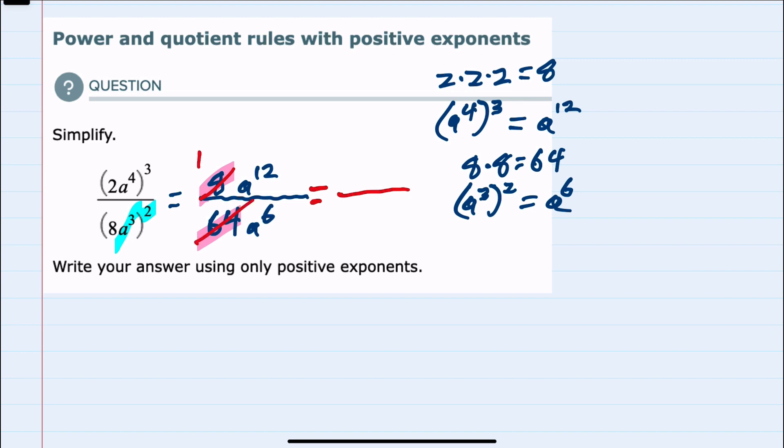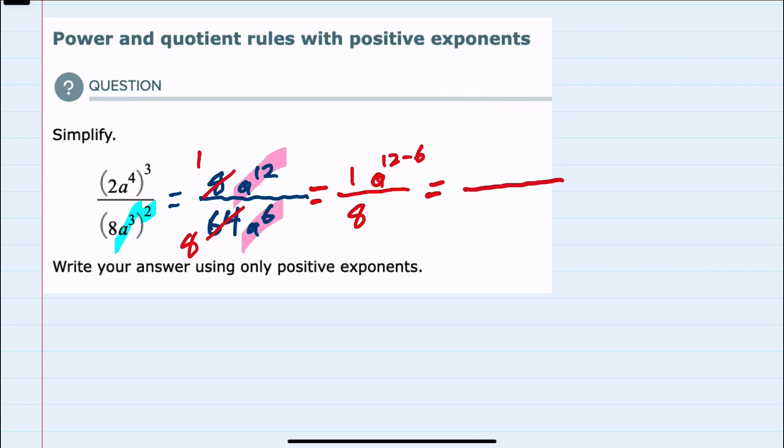For the a portions we have a to the 12 in the top, a to the 6 in the bottom. We can combine those into a single a in the top by taking the power in the top, 12, and subtracting the power of the bottom, 6.